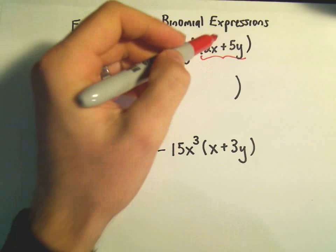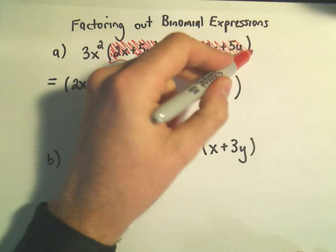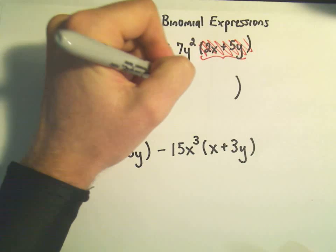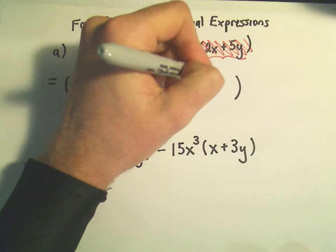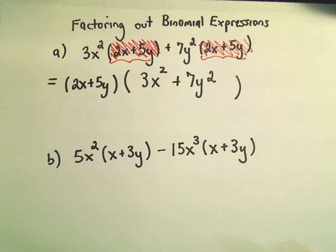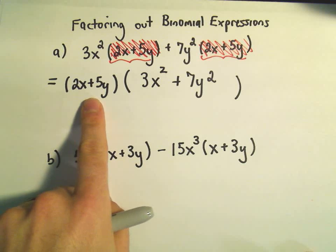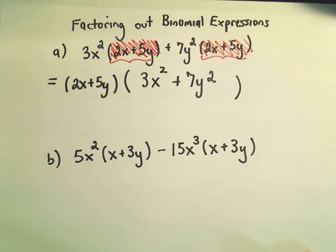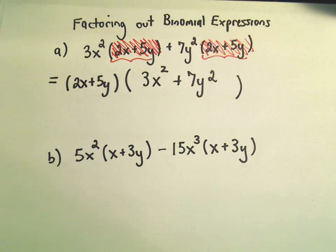And likewise, for the second factor, since I pulled out the 2x plus 5y already, the only thing that I still need is the plus 7y squared. And now we've factored out the greatest common factor, it was a binomial. 3x squared plus 7y squared definitely doesn't factor any further.